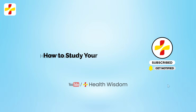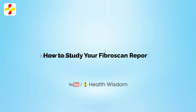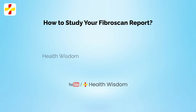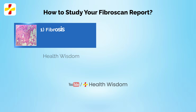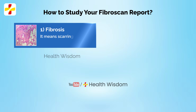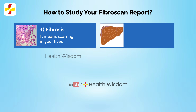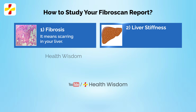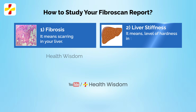How to study your Fibroscan report. Here are some helpful terms to know related to your Fibroscan results. 1. Fibrosis: it means scarring in your liver. 2. Liver stiffness: it means the level of hardness in the liver related to liver scarring.